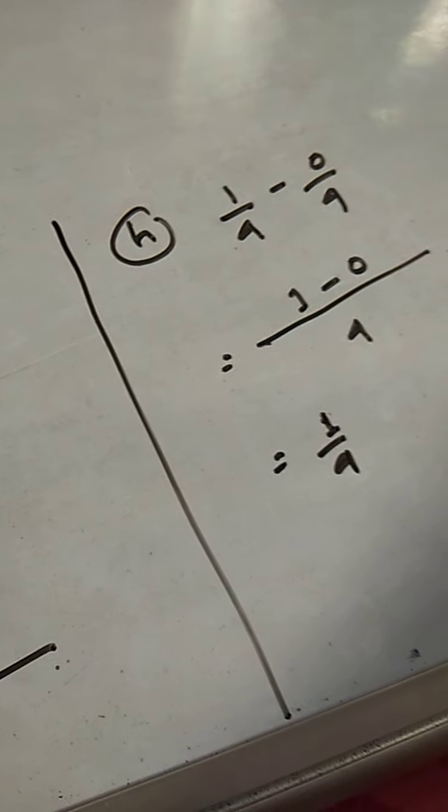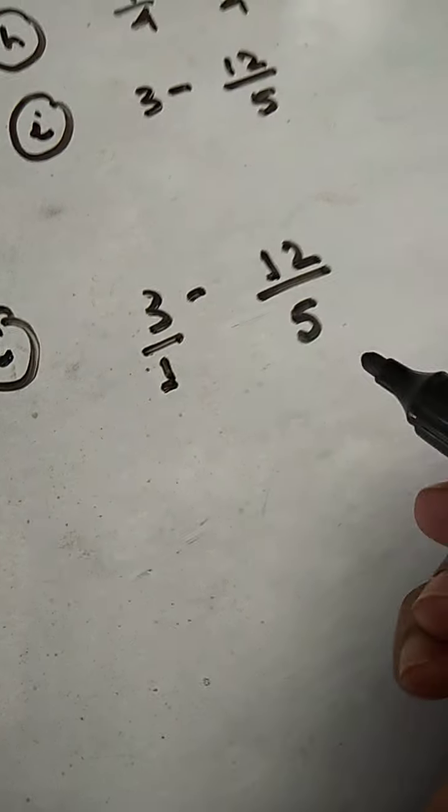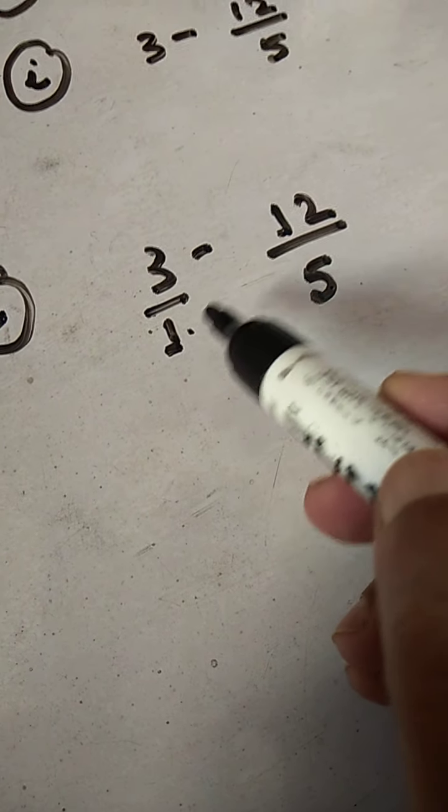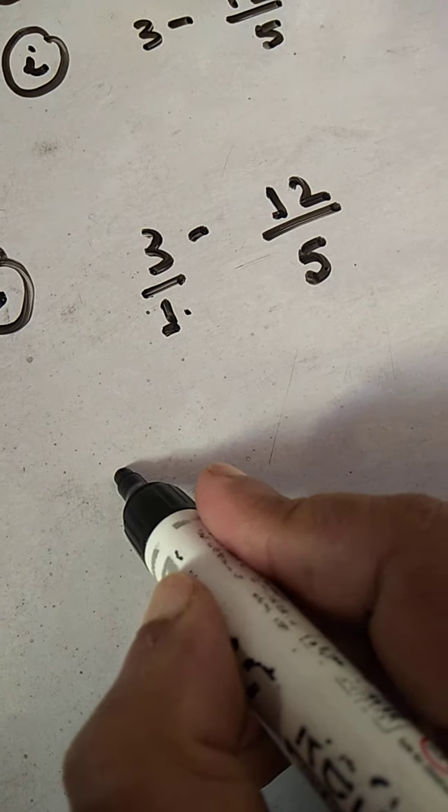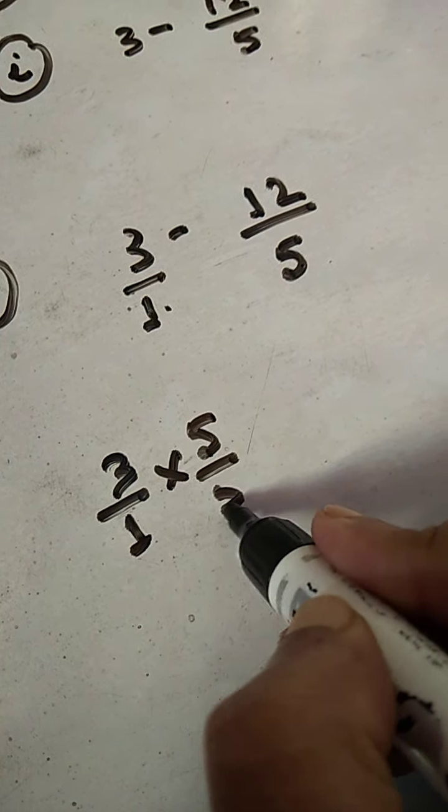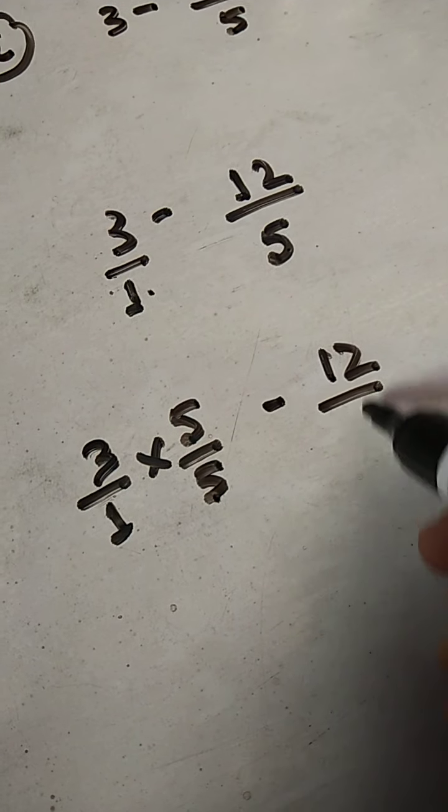Let us move on to sum number I. Again, there is a number 3. So, 3 is carrying the denominator as 1. You see 1 and 5, it is not matching. So, we have to make the denominator same. For that, what we have to do? We have to multiply this 3 by 1 with 5 upon 5.